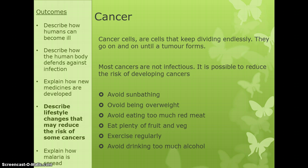There are things you can do to reduce your risk of developing cancer. Avoid sunbathing too often, as repeated sunburn increases your risk of skin cancer. Being overweight increases your chances because fat cells are very active, and that extra activity raises the risk of some becoming cancerous. Large amounts of red meat have been shown to increase cancer risk. Eating fruit and vegetables — particularly broccoli — can help reduce your risk. Being generally fit, exercising regularly, and avoiding too much alcohol also reduce your risk. These are all risk factors that can change your chances of getting cancer.